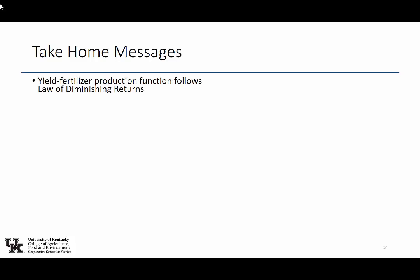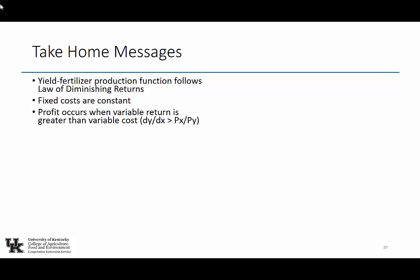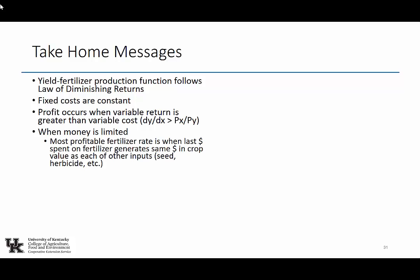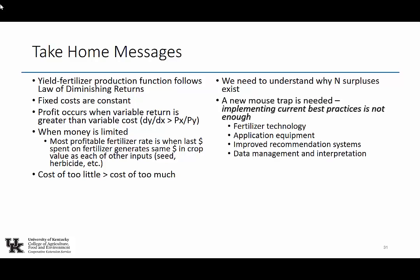At the end of the day, the yield-fertilizer production function follows the law of diminishing returns. Profit occurs when the variable return is greater than the variable cost — the change in yield over the change in nitrogen rate is greater than the price of nitrogen divided by the price of yield. The cost of too little fertilizer is much greater than the cost of too much. But we need to fundamentally understand why nitrogen surpluses exist: weather, spatial variability, economics. And if we're going to meet water quality goals, current best management practices will not do it — that's my informed opinion.